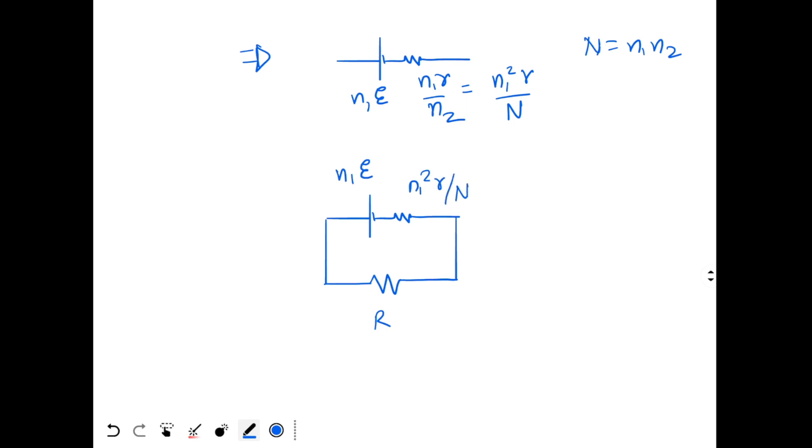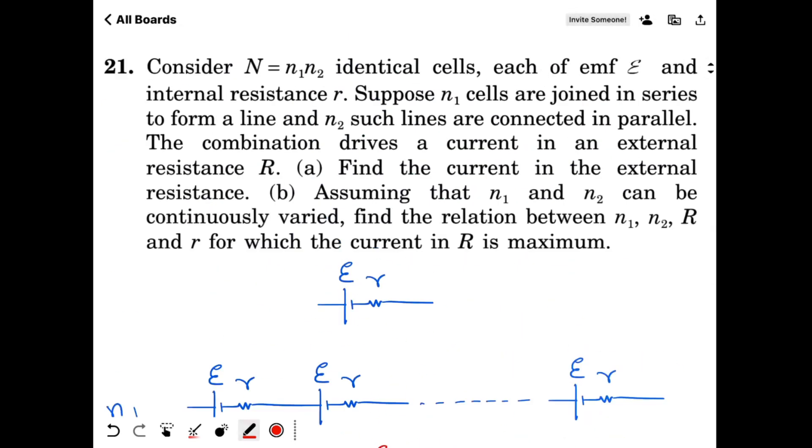This is the internal resistance. So the current I in the circuit will be how much? I will be total EMF N1E divided by total resistance. So R plus N1 square r by capital N. So we solved part A of the question.